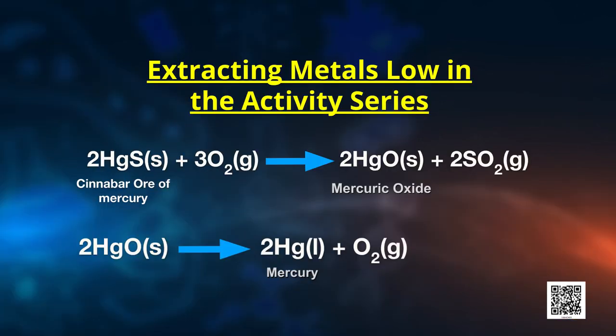Coming to extracting metals low in the activity series — these metals are very unreactive, and oxides of these metals can be reduced to metals by heating alone. Let us see an example: cinnabar. Can you recall the formula for cinnabar? It is HgS. This is an ore of mercury. When it is heated in air, it is first converted into mercuric oxide (HgO). Mercuric oxide is then reduced to mercury on further heating. You can see the reactions on this slide.